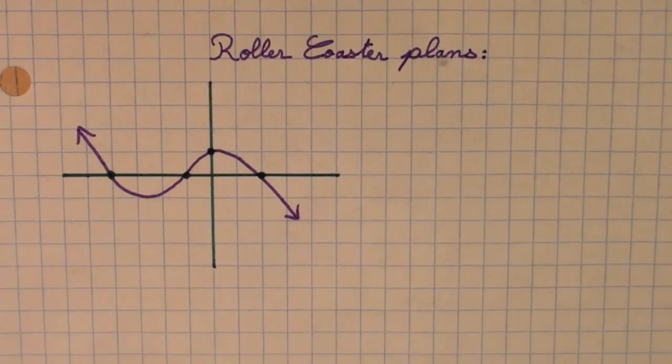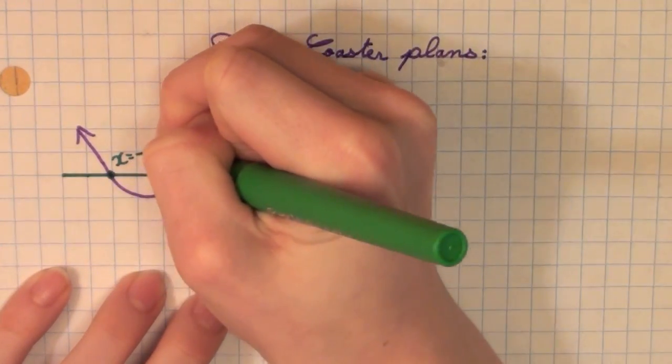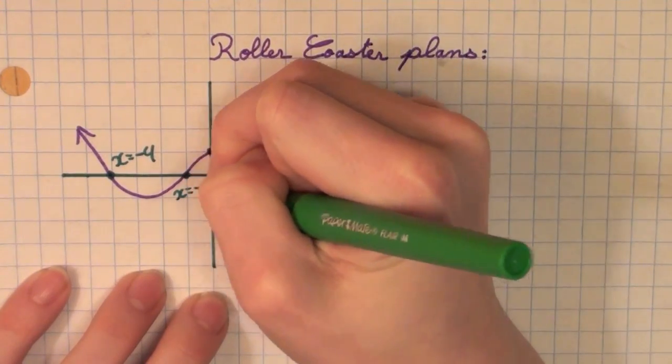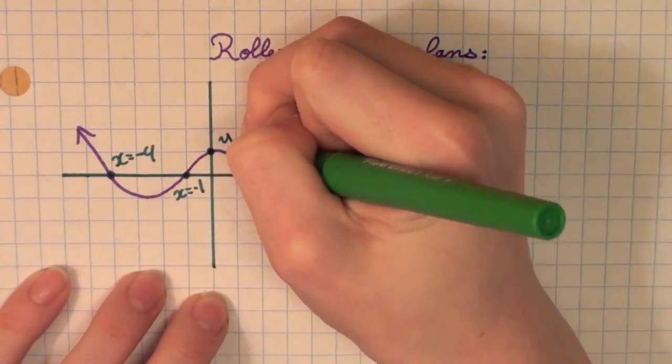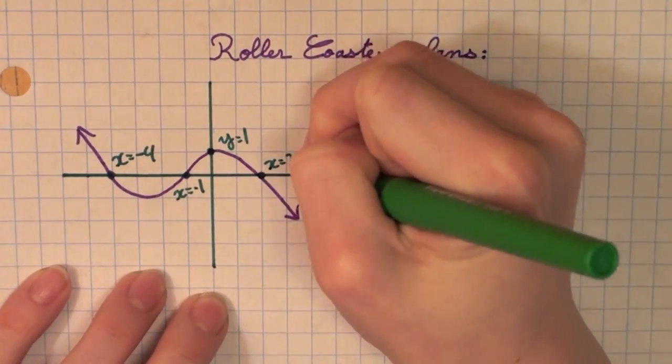The first time, the first X-intercept that it crosses, X is negative 4. The next, X is negative 1. The next, Y is 1. The next, X is 2.